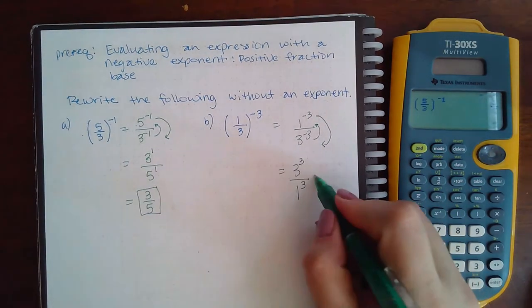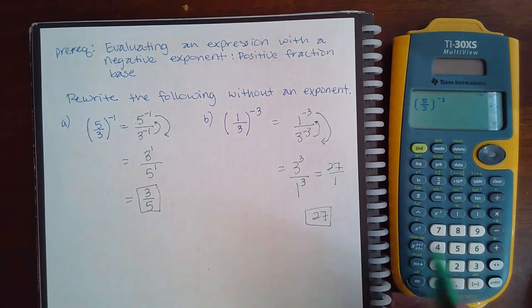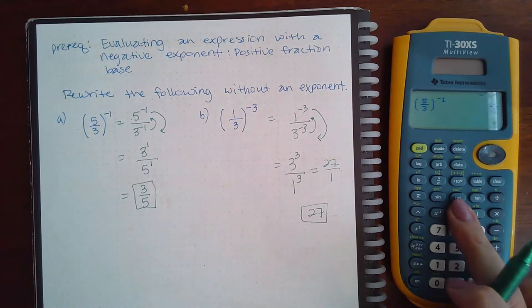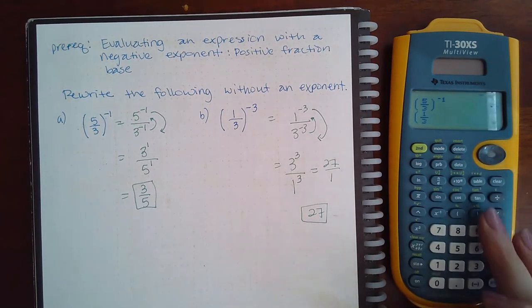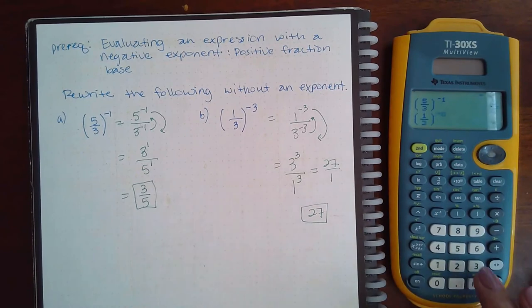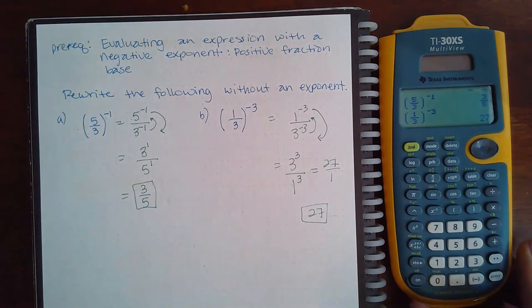This gives me 27 over 1, or just 27. Again, I could type parentheses, fraction 1 over 3, go to the side, close the parentheses, raise it to the negative three exponent, and it will tell me that the answer is 27.